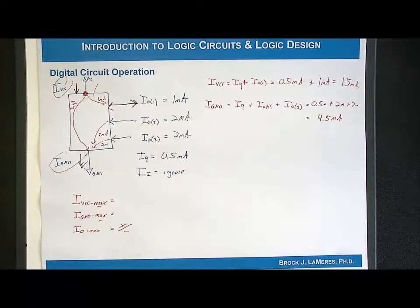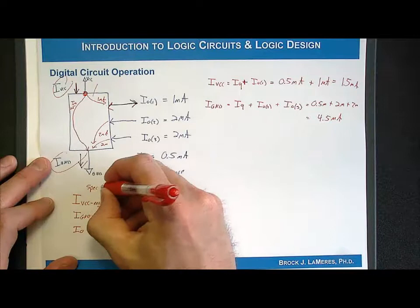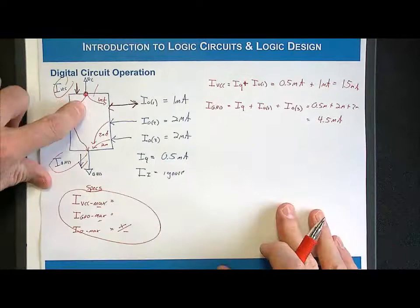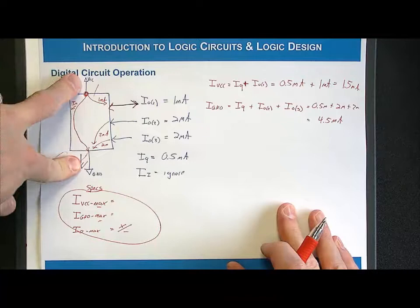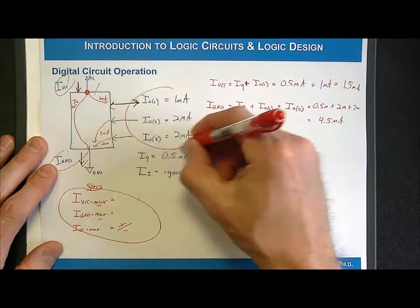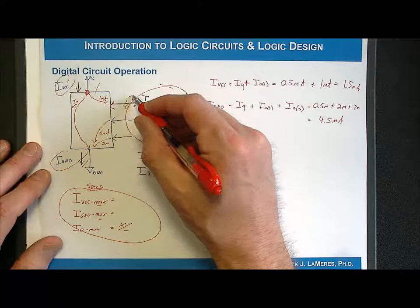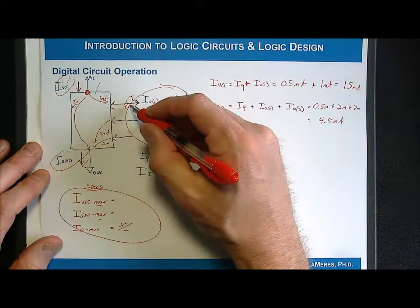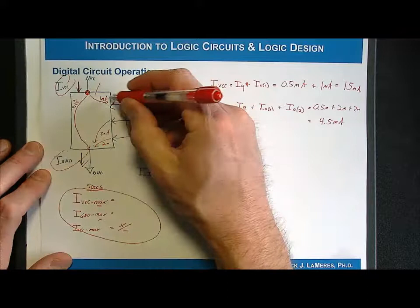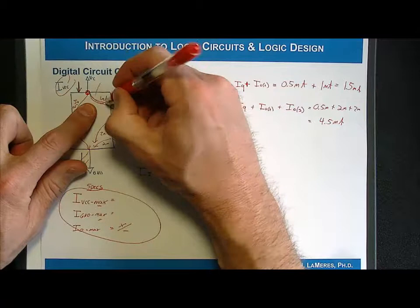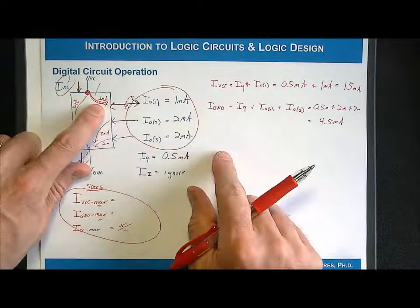You don't have control over the quiescent current or the required power supply voltage — those are dictated. What you do have control over is the load. The load takes whatever current it wants: an open-circuit load takes no current, but a power-hungry resistor can consume a lot. If you connect a load that violates the current specifications, it will melt the device.